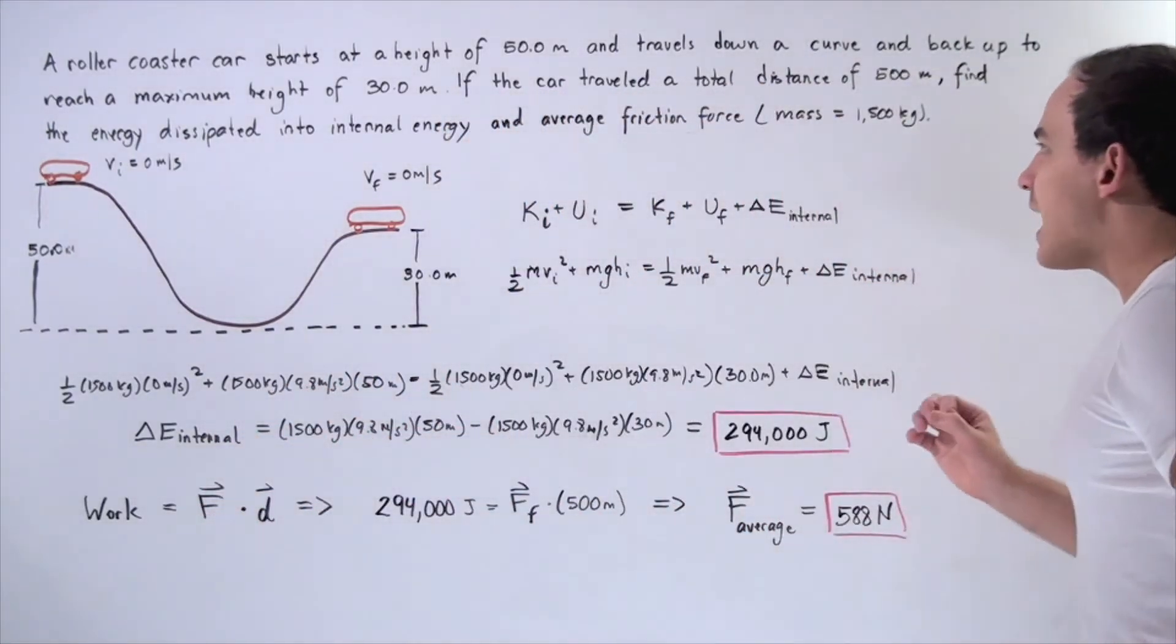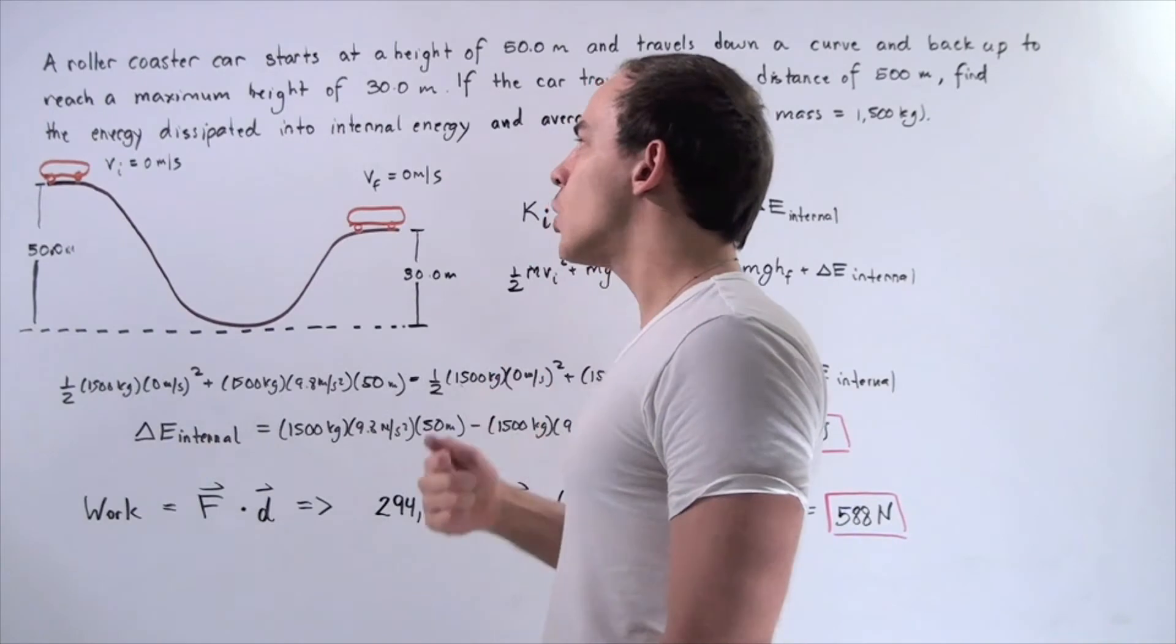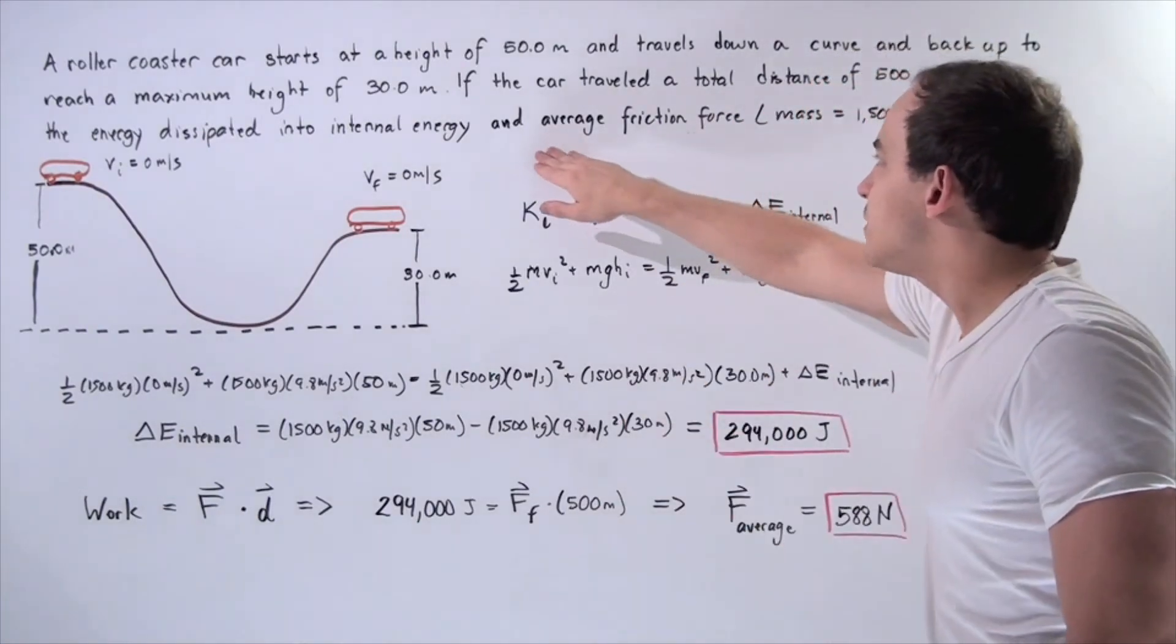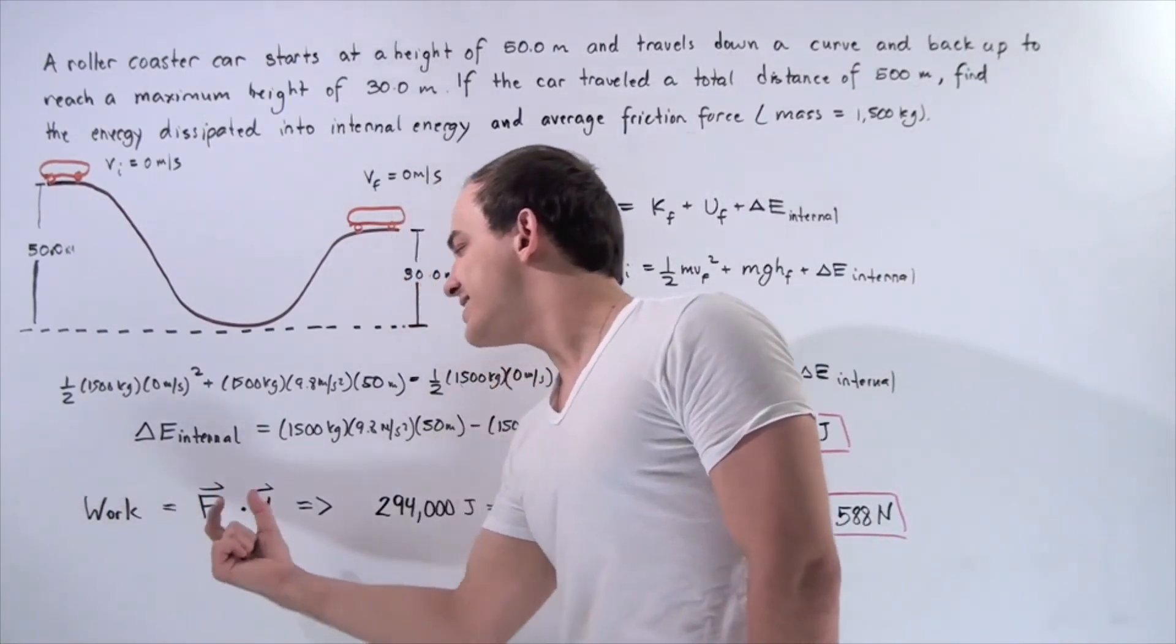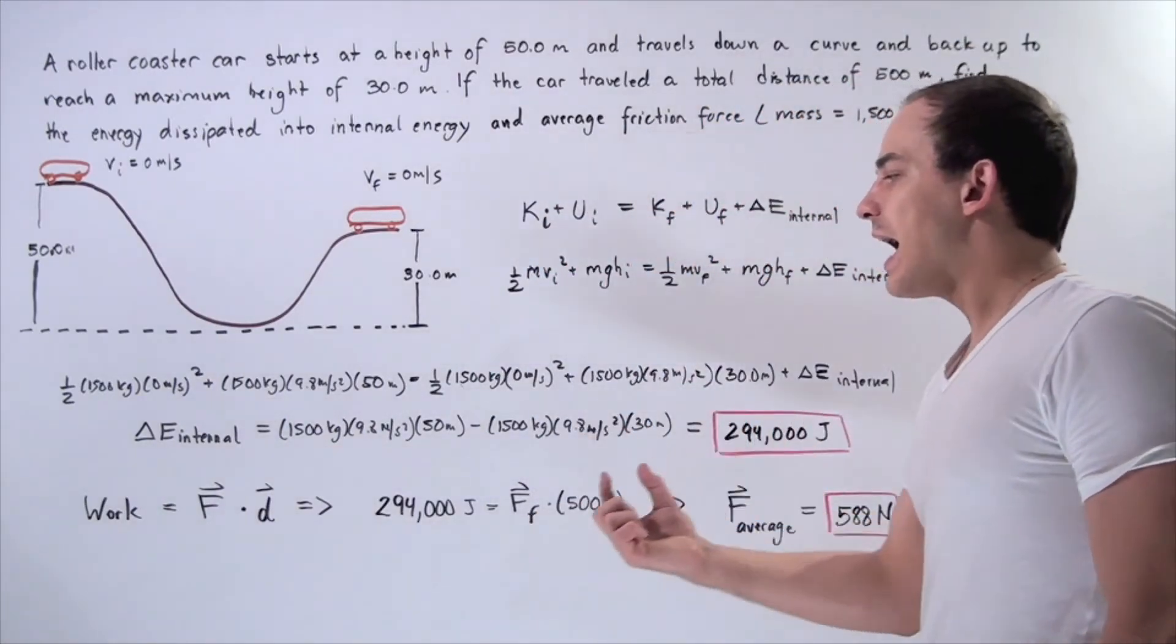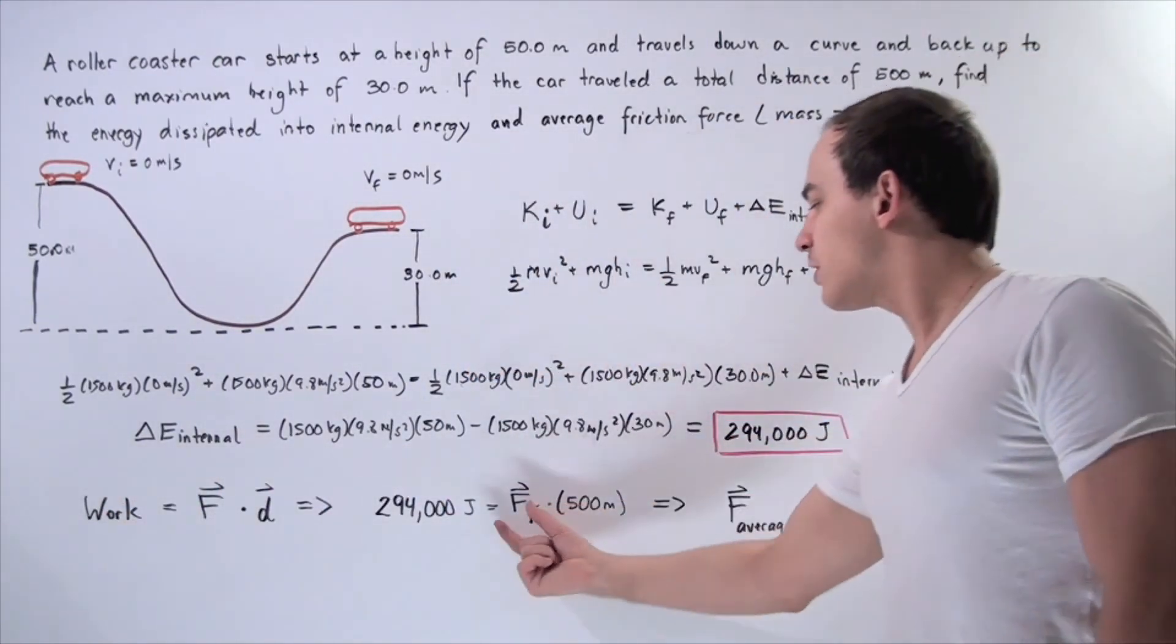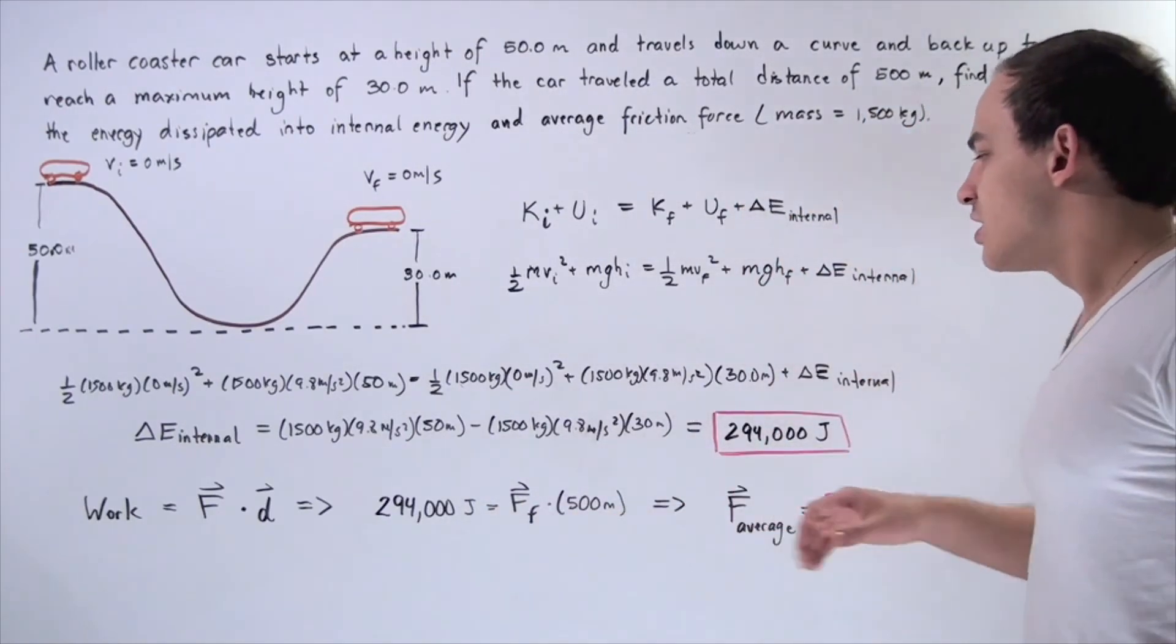Now we'd like to find the average force of friction. We know that the total displacement, the total distance our object travels is 500 meters. As long as we assume we have an average frictional force, we can use the following equation: work done equals the average frictional force multiplied by our displacement. We know displacement and we know the work done, which is this amount.